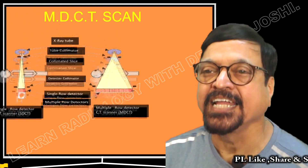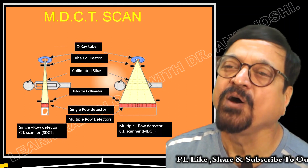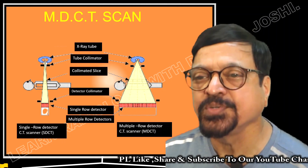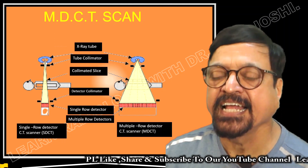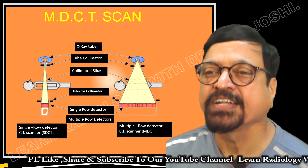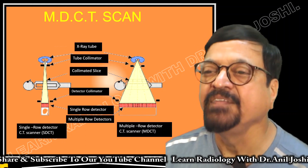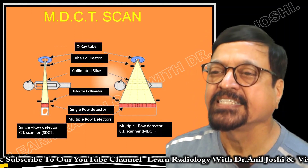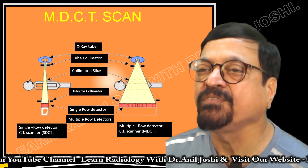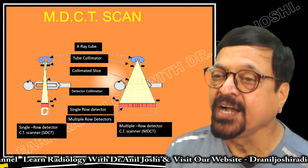First to start with is MDCT. Here we are seeing how MDCT differs. We can see the X-ray tube or CT tube, then the tube collimator, then the collimator slice coming down, and then the detectors taking the signals. On the left-hand side we see a single row detector — single slice. On the right side are multiple row detectors — that is MDCT. So in MDCT, slices are multiple and more area is covered.